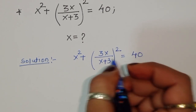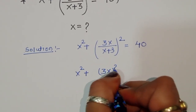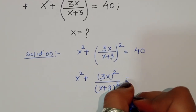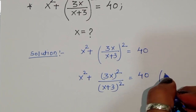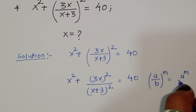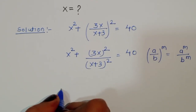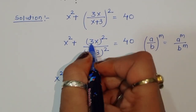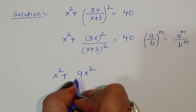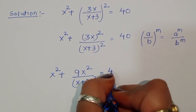We can write (x² + 3x)²/(x+3)² = 40, because for (a/b)^m we can write a^m/b^m. So we are separating the power for numerator and denominator. Now (3x)² = 9x², so we get x⁴ + 9x² upon (x+3)² — wait, expanding: numerator becomes (x² + 3x)² = x⁴ + 9x², giving 9x²/(x+3)² = 40.